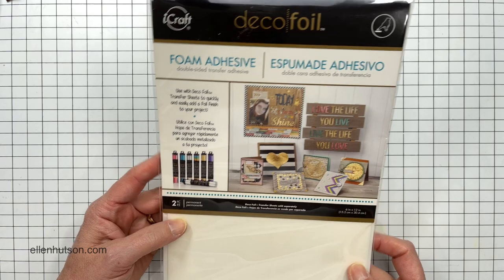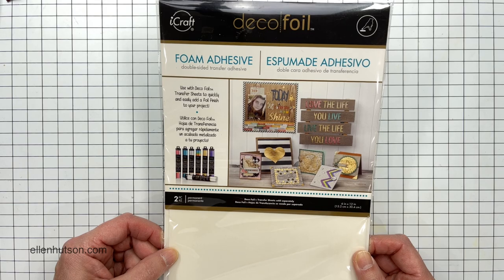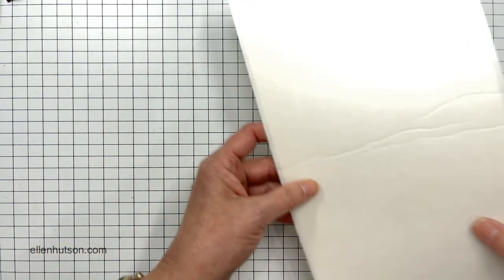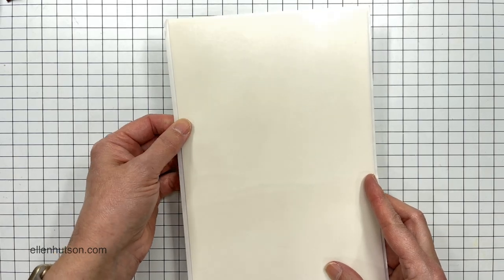And I've got some of this foam adhesive. It's double-sided sticky foam but it's thin and it's by iCraft, DecoFoil by ThermoWeb. And here I'm just showing you what the whole sheet looks like.